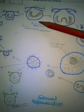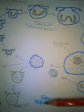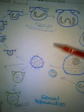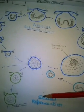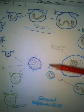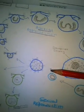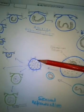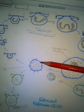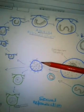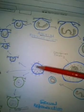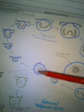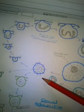Volvox reproduces both asexually and sexually. At one time, the colony reproduces either sexually or asexually, not both at the same time. Only a few cells of the colony are capable of taking part in reproduction. The remaining cells are sterile and are called sterile cells.